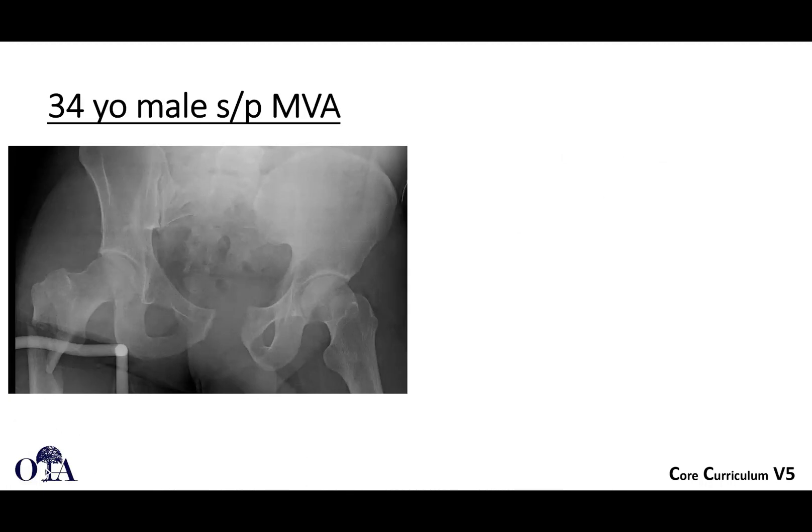The Tile classification — Tile A, B, and C — is also important to review. Tile A is a stable ring injury such as an avulsion fracture. Tile B injuries are rotationally unstable but vertically stable, like an APC2. Tile C injuries are rotationally and vertically unstable, like an APC3 or vertical shear. In summary, Tile focuses on stability while Young-Burgess focuses on mechanism.